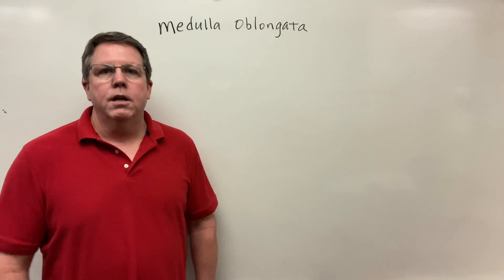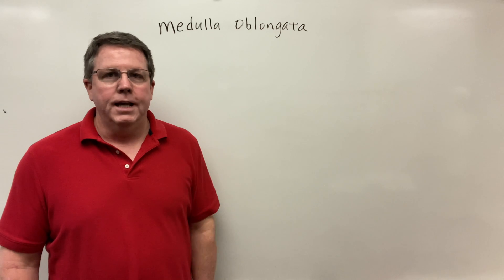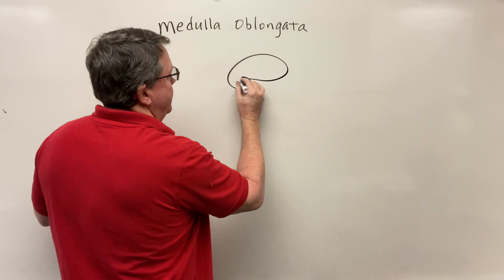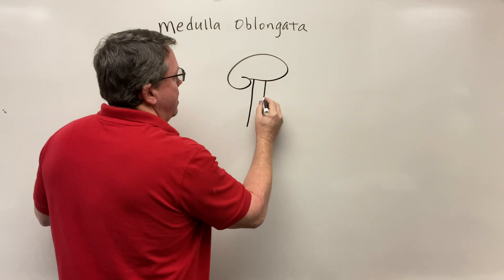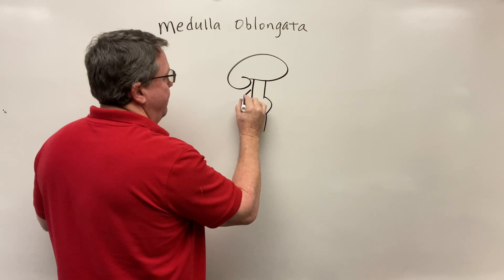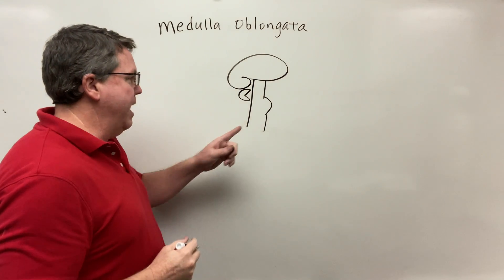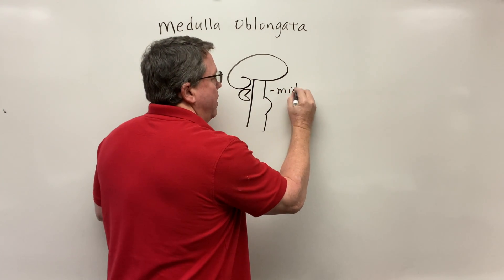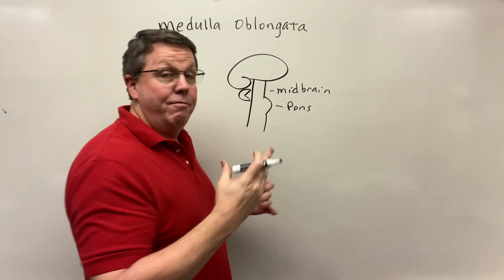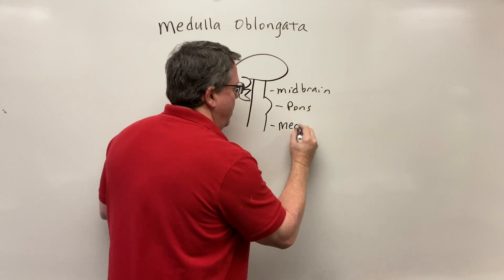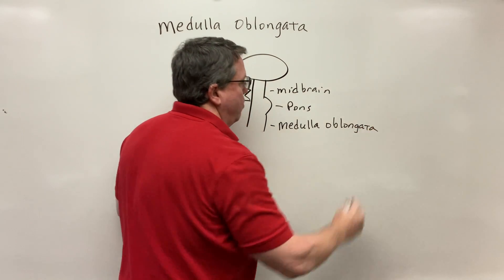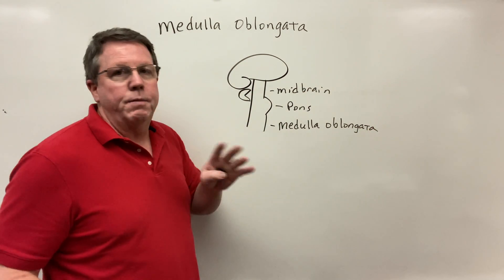Today we are going to be talking about the medulla oblongata. As we've been going through the brainstem, we have the midbrain at the top, the pons below it, and then at the bottom we have the medulla oblongata. We also have the cerebellum in the back. We've done videos on the midbrain and the pons, so now let's take a look at the medulla oblongata.